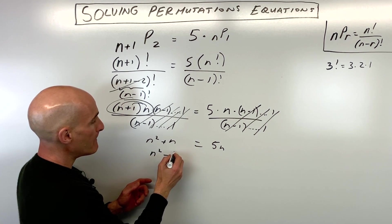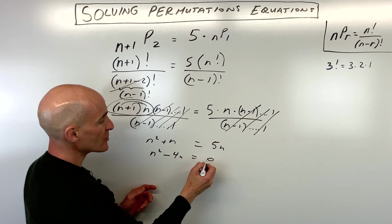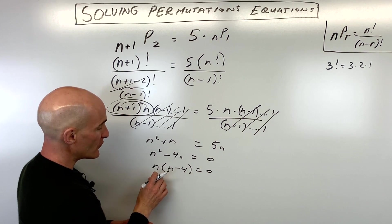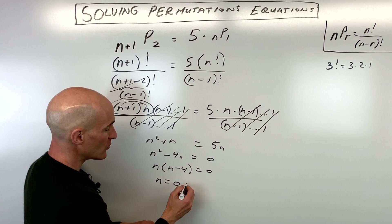That gives us n squared minus 4n equals 0. If we factor out an n, we get n times (n minus 4) equals 0. Setting each group equal to 0, n equals 0 or n equals 4.